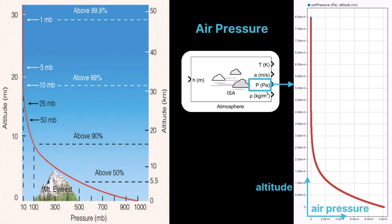Air pressure decreases with altitude because the density of air molecules drops as you go higher. At sea level, the air column above is the greatest, so pressure is highest. As altitude increases, there's less air above you, resulting in lower pressure. The ISA atmosphere block in Simulink provides standard pressure values as a function of altitude, based on the international standard atmosphere model.